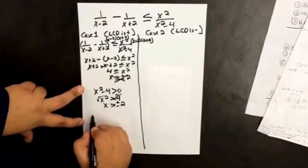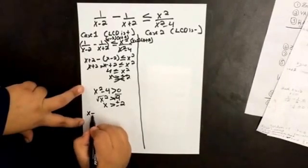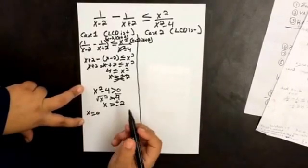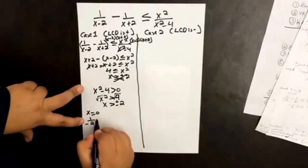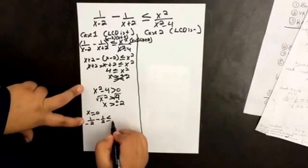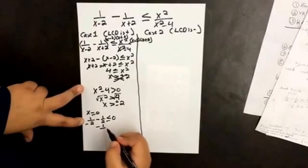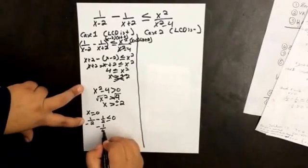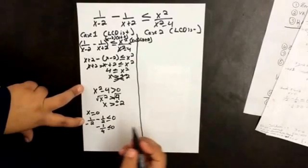Let's check those values. If we have x equals 0, then we get 1 over negative 2 minus 1 over 2 is less than or equal to 0. Yes, we get negative 1 fourth less than 0, which is true.